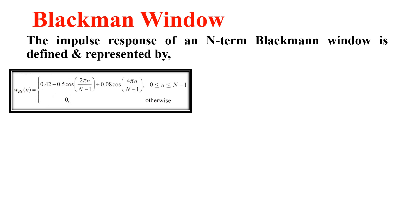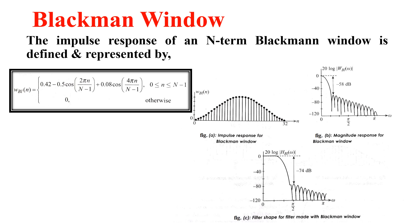Moving on, we have the Blackman window. The impulse response of an N-term Blackman window is defined and represented by this formula, which we need to remember. We also have three figures showing the impulse response, magnitude response, and filter shape for the Blackman window.